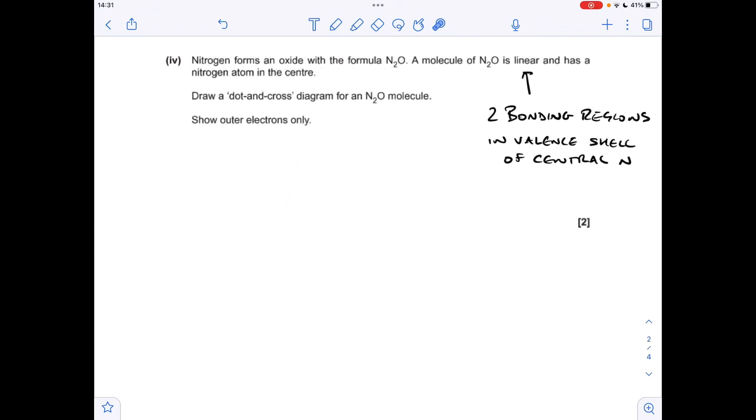Moving on to the dot and cross diagram for N2O. So there's a clue here in the fact that they've said that it's a linear molecule. So that means there are two bonding regions in the valence shell of that central nitrogen. So remember, oxygen has six valence electrons, and the nitrogens have five each. So the first thing I'm going to do is put a pair of electrons from the central nitrogen into this bond here. So this is going to be a coordinate bond.